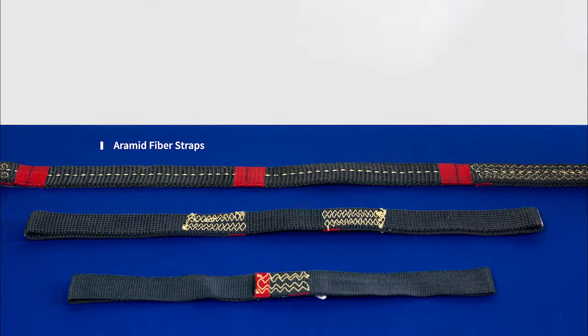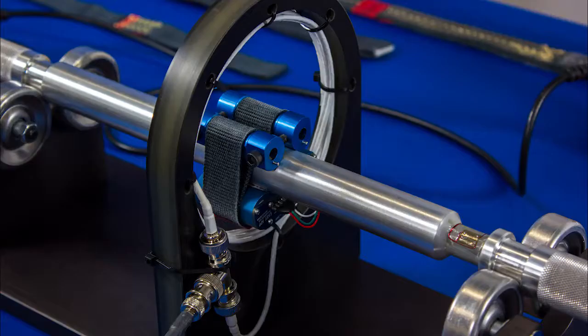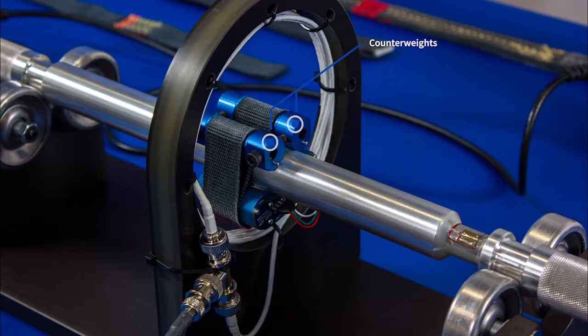Straps of different lengths and materials are available for different shaft sizes and machine running speeds. Mounted via a yoke opposite the transmitter are counterweights so that no balancing is required.